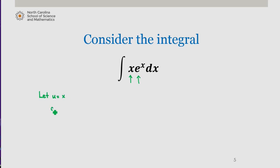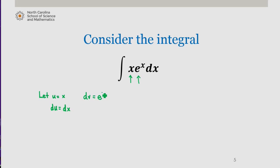Let's let u equal x. As a result, du is equal to dx — if we think of this as differentiating both sides with respect to x, du/dx equals 1, which re-expresses as du equals dx. We'll define dv as e to the x dx. We can view this as dv/dx equal to e to the x, which means the antiderivative v is e to the x.